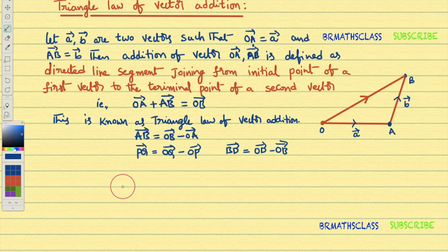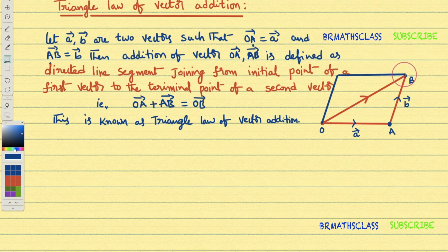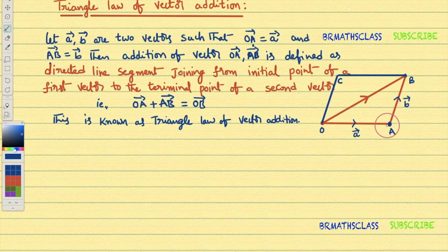Now we will learn about the parallelogram law of vector addition. Here I will complete the parallelogram OABC. AB-bar is b-bar. Since OABC is a parallelogram, OC-bar and AB-bar have the same length and same direction — they are equal vectors. So OC-bar is also b-bar.